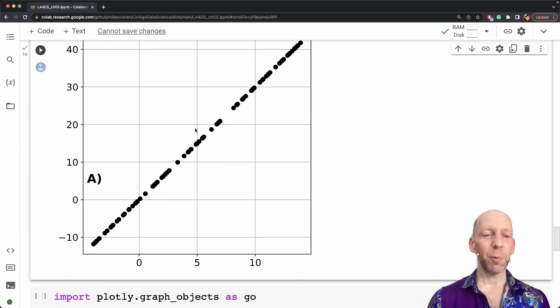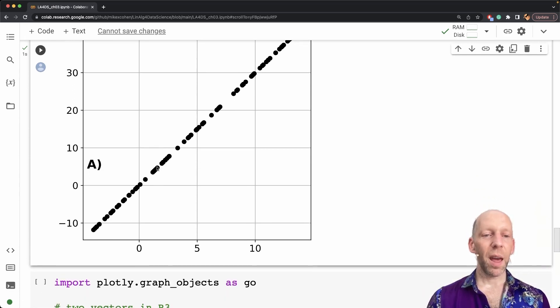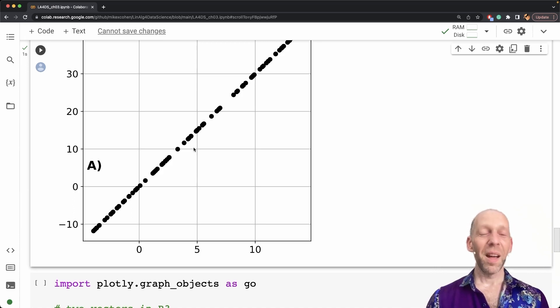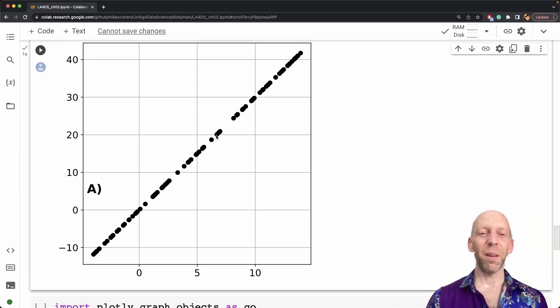So here we see that we started with one vector, and all of the points randomly selected scalars. In theory, these are scalars that go from minus infinity to plus infinity. Here, we just randomly selected some. The point is that all of these fall on a line. And this is the visualization of a subspace that we can create using a vector as a basis vector as a ruler for this subspace. So this is the picture that you should have in mind when you are thinking about subspaces.